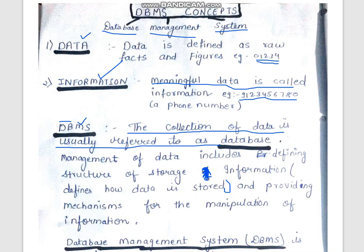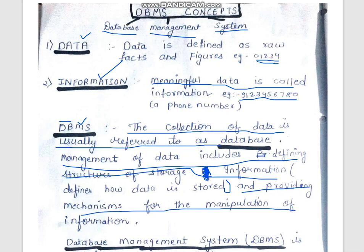Now, management means how we store that data and how we manipulate it. How do we store it? For example, I store information in a copy, or I make an Excel sheet, or a Notepad file — that involves management. And how do I read that information also falls under management. So in management, there are two things: data is stored and data is manipulated. Management of data involves defining the structure for storing information and providing mechanisms for manipulating the information.